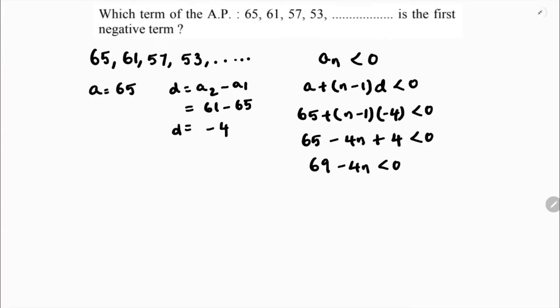So as it is an equation, my advice is make the variable positive: 69 less than 4n. So 69 by 4 is less than n, or you can write n is greater than 69 by 4.